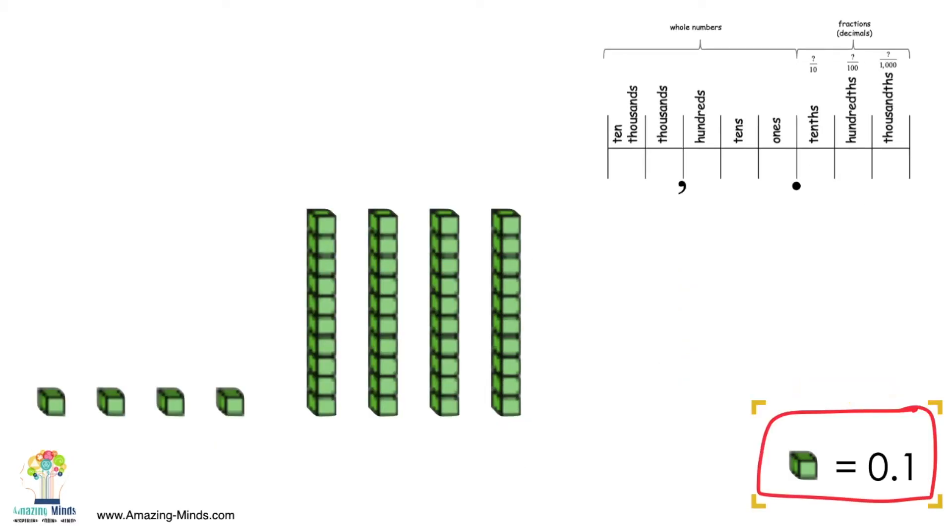Notice that now my one small block represents 1 tenth and not 1. So I have 1 tenth times 4 tenths.